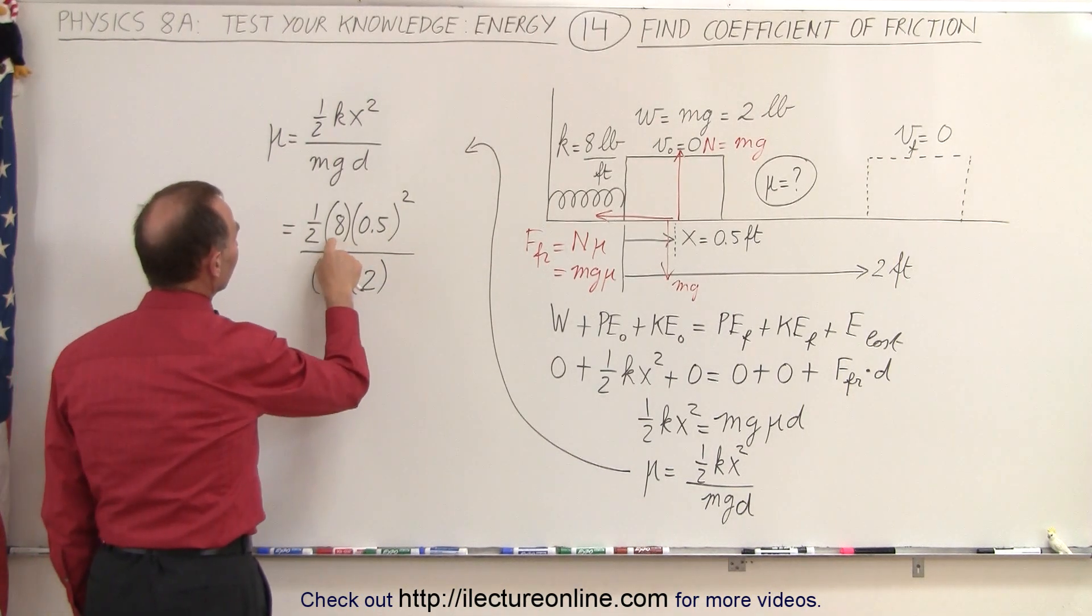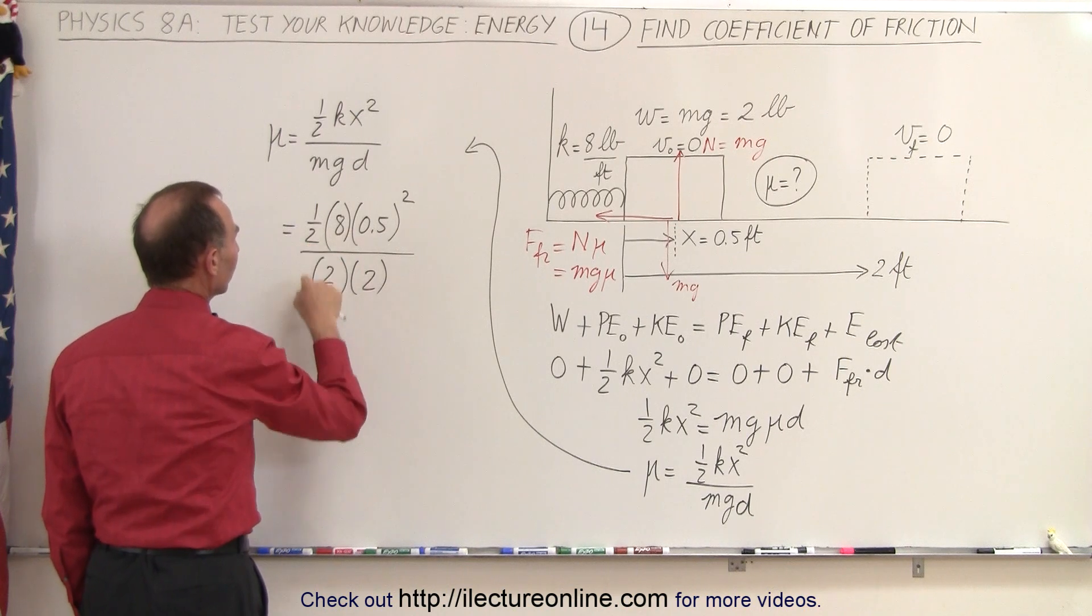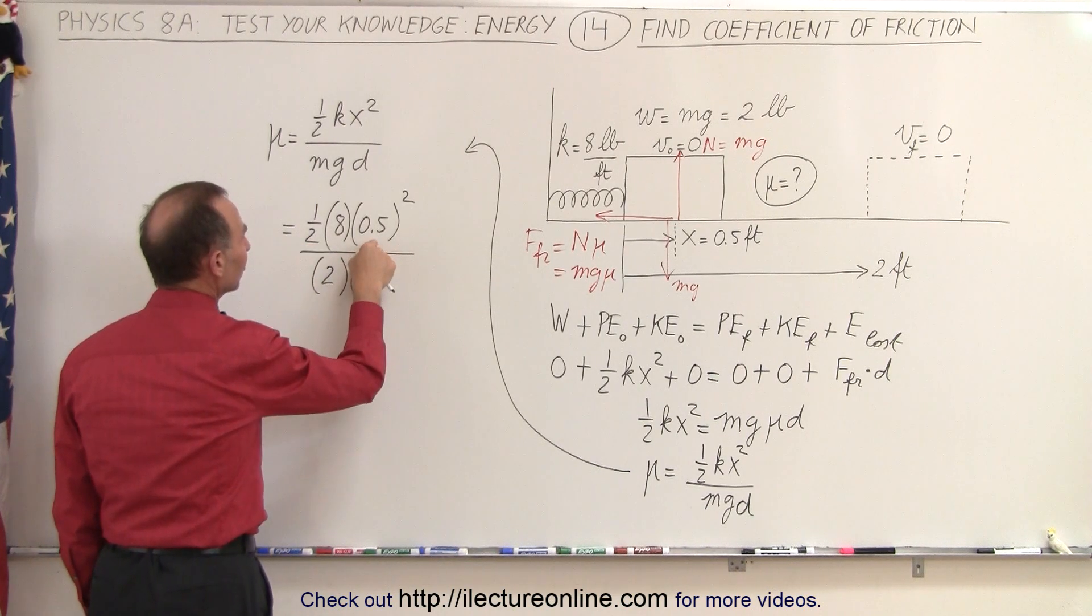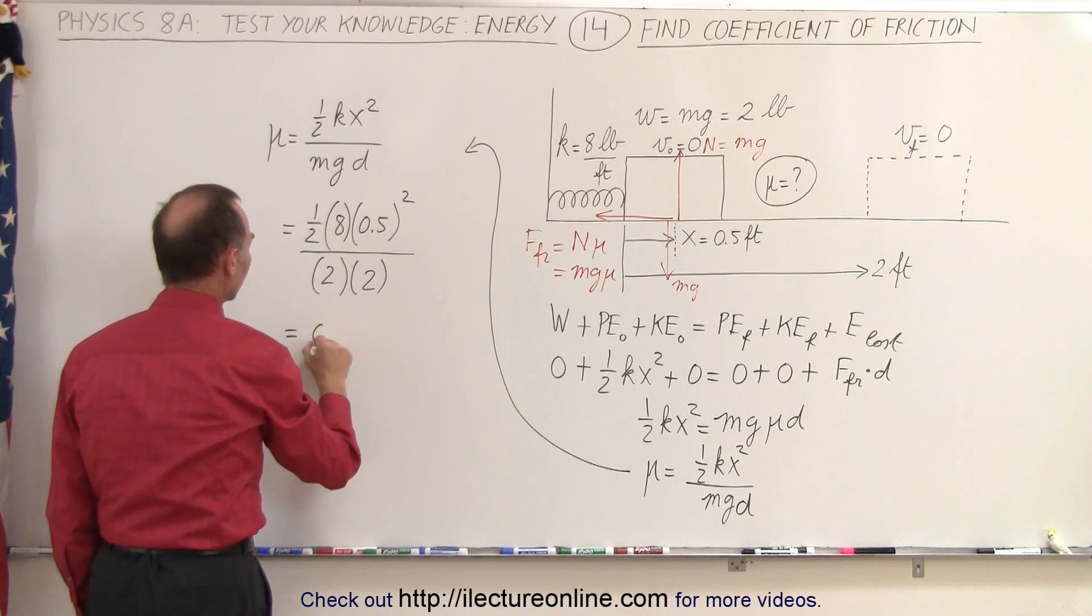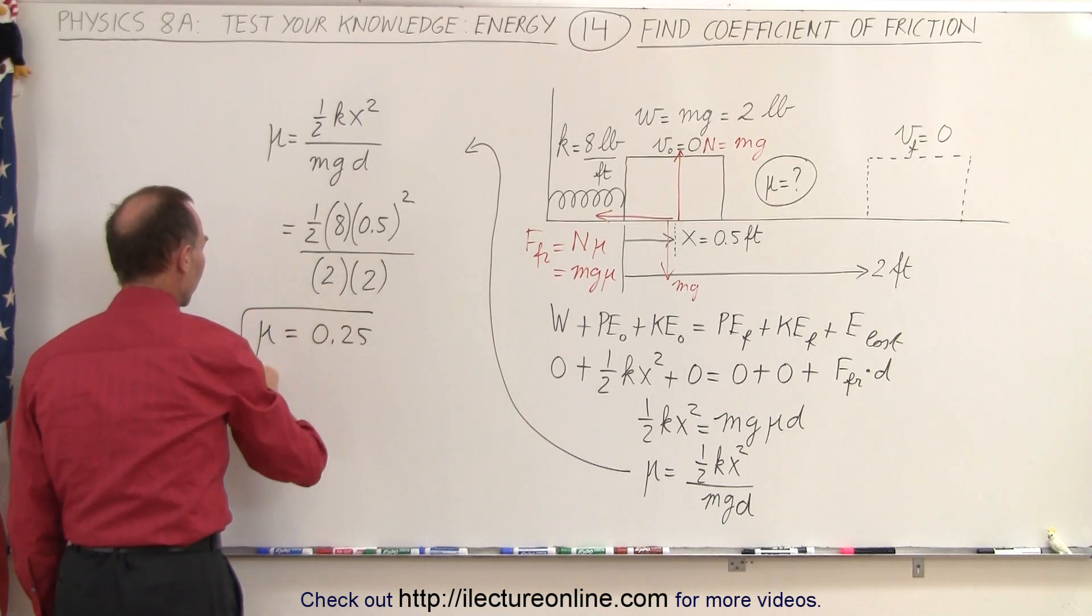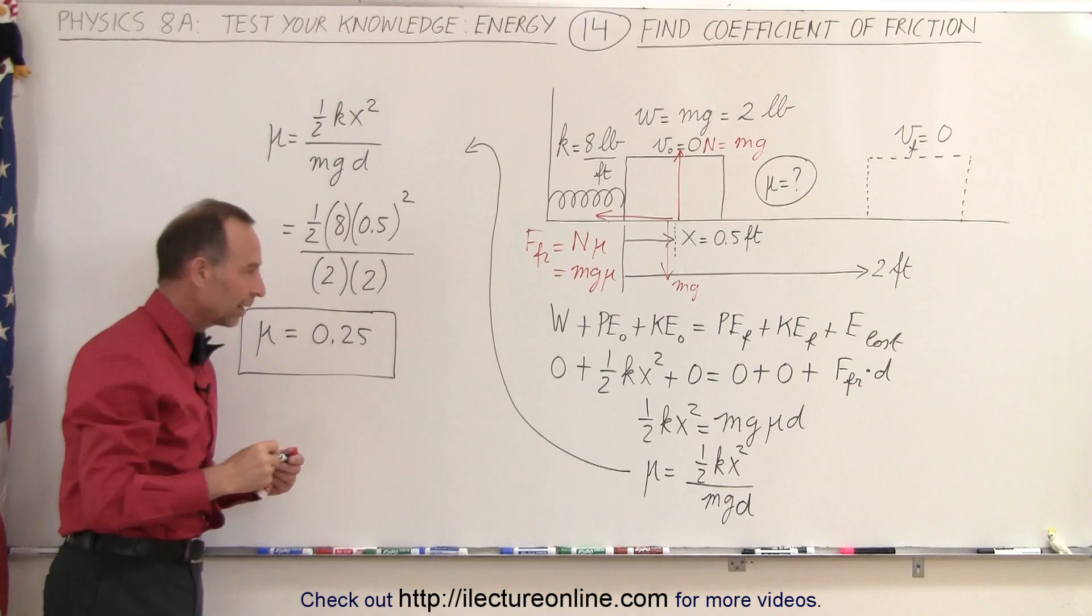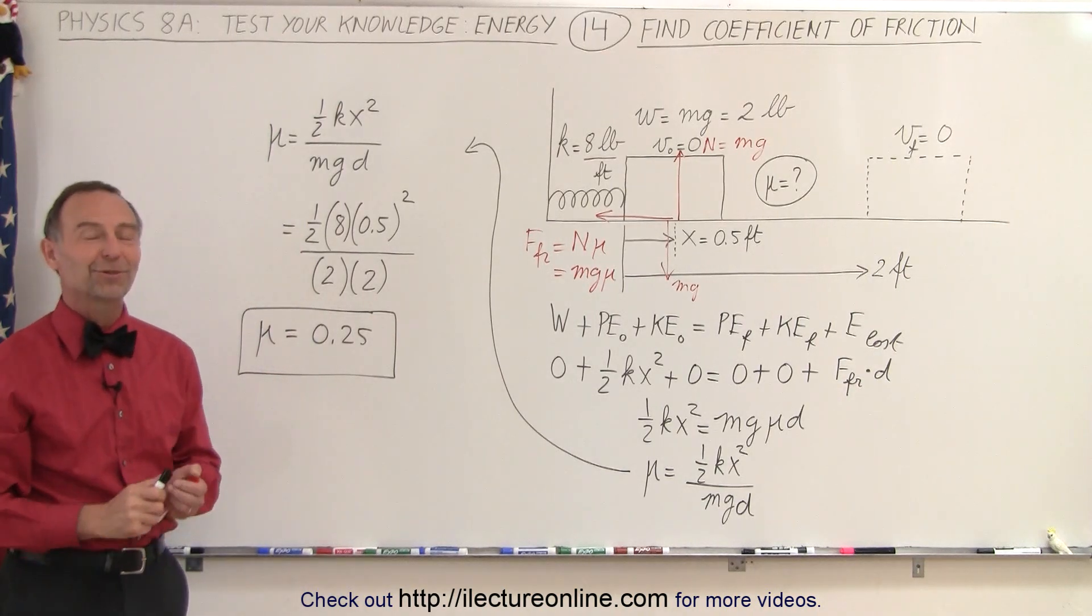Now we have eight divided by two is four divided by four is one times 0.5 squared. So it's equal to 0.25. And that would be the coefficient of friction in this particular case. And that's how it's done.